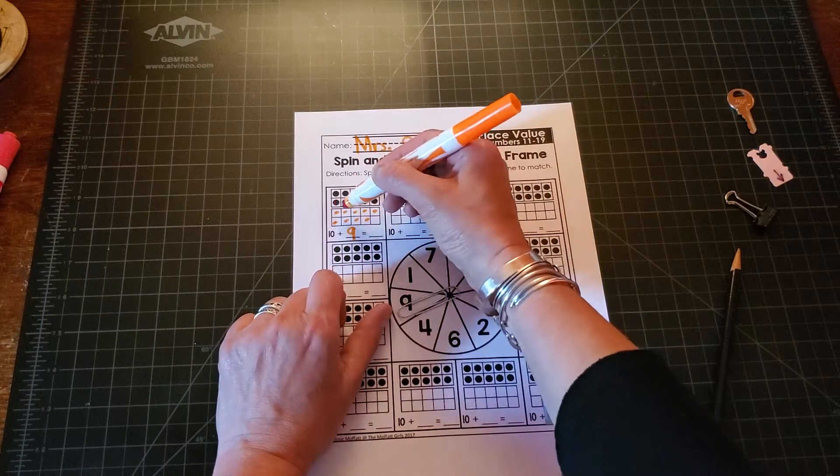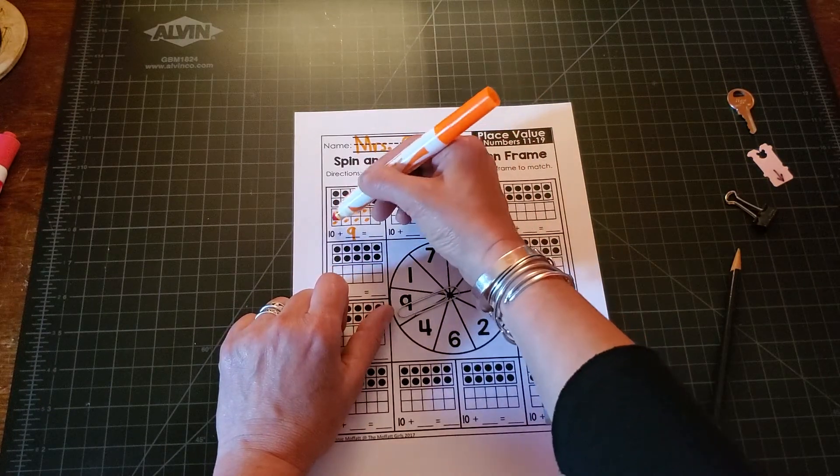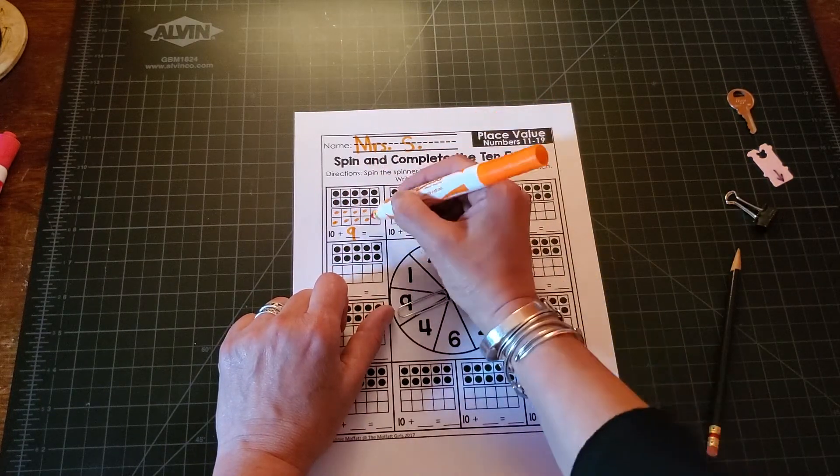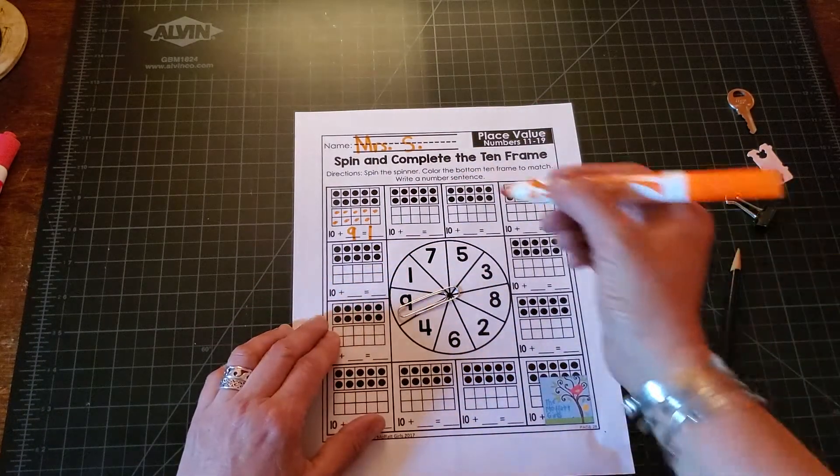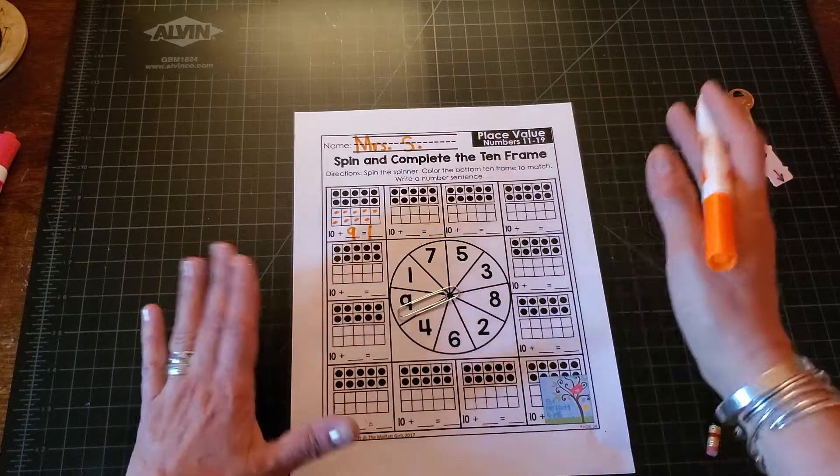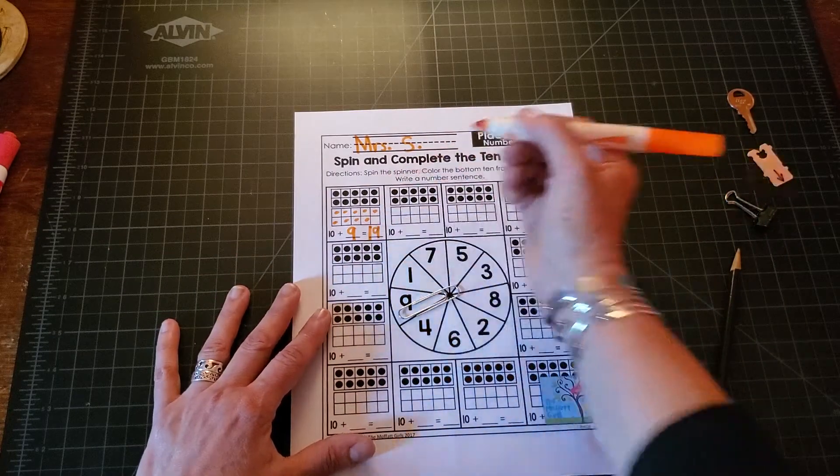So ten, eleven, twelve, thirteen, fourteen, fifteen, sixteen, seventeen, eighteen, nineteen. Remember to always write your one first when you're doing teens because the one represents ten. And then your some more. Nine.